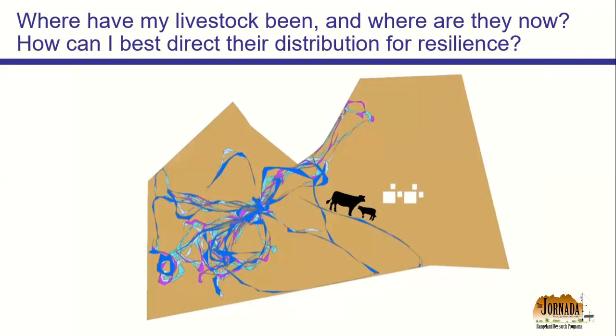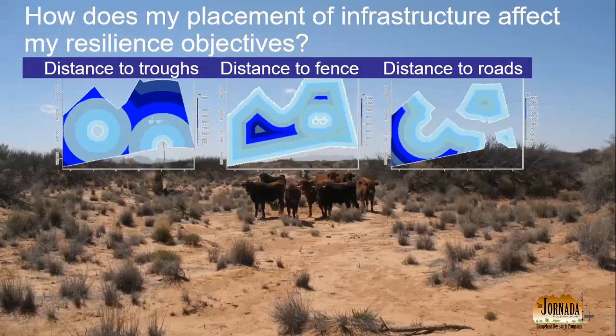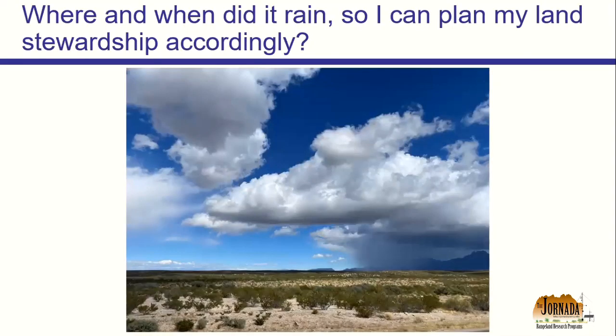Another big question that comes up time and again: where have my livestock been, where are they now, and how can I best direct their distribution over space and time to meet my resilience goals? Related to that, the placement of infrastructure — troughs, fence lines, roads — can really affect that patchy mosaic of vegetation and soils, so there are many decisions to be made about infrastructure placement in a livestock setting.